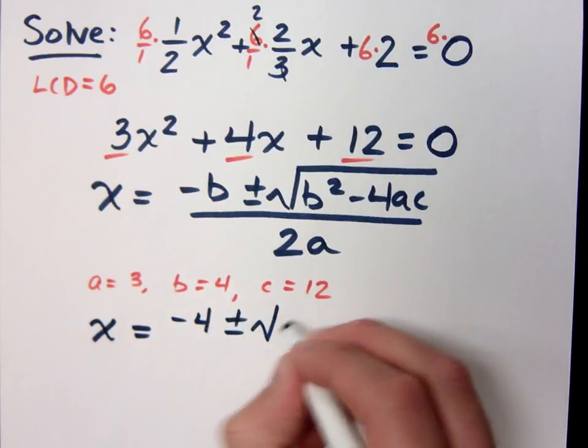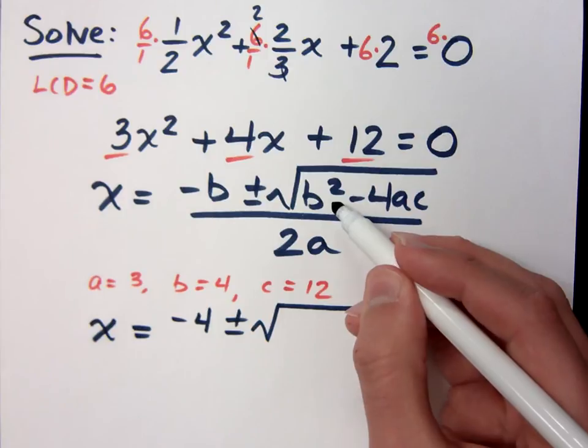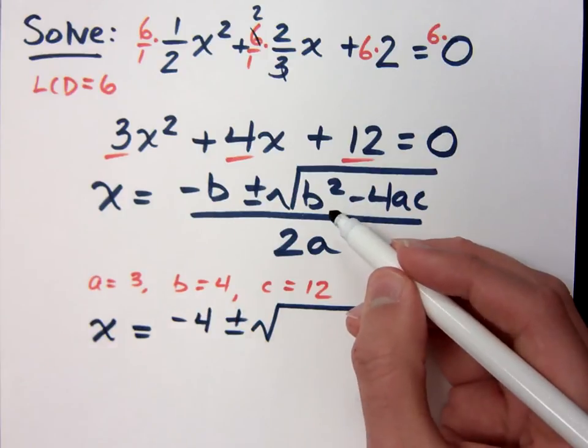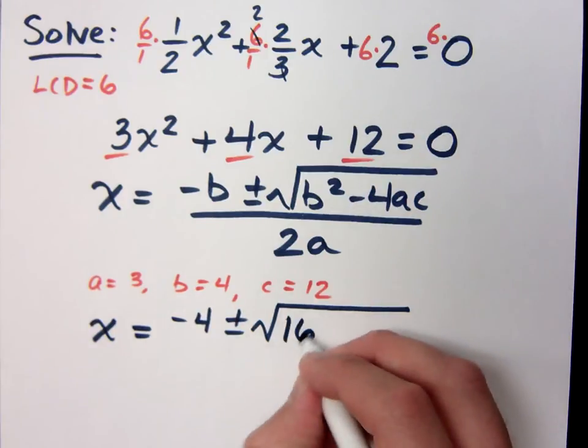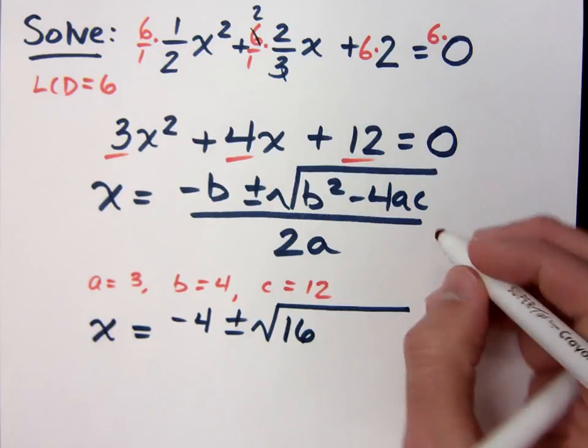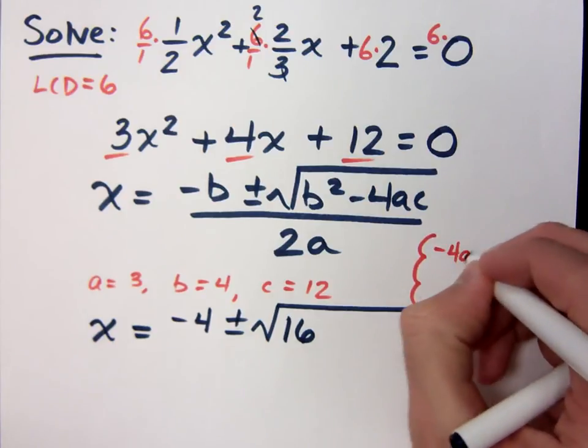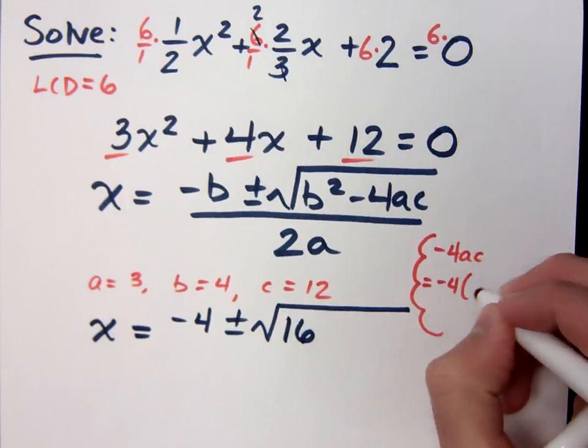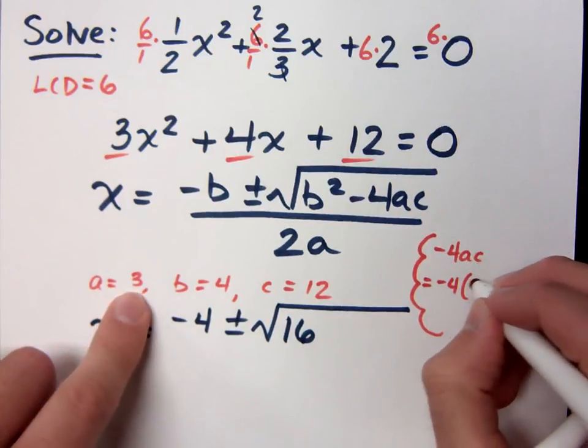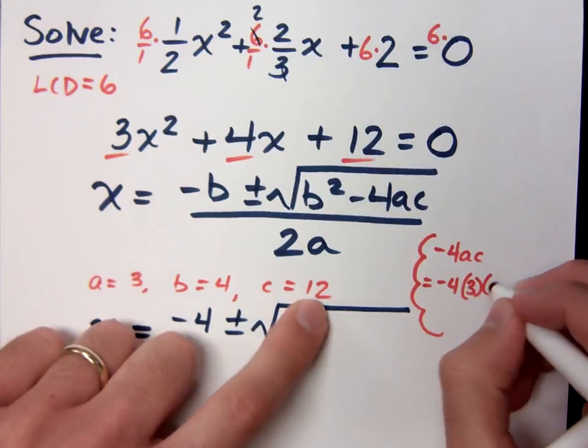Plus or minus the square root. b squared is 4 squared, so that's 16. Now the minus 4ac I'm going to do off to the side here, my little thought bubble. Minus 4ac is negative 4 times a, which is 3, times c, which is 12.